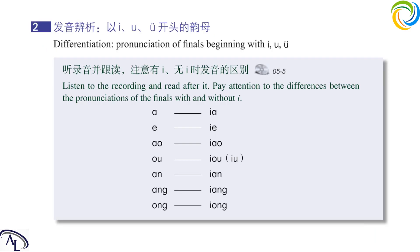听录音并跟读，注意有 i、无 i 时发音的区别。Listen to the recording and read after it. Pay attention to the differences between the pronunciations of the finals with and without i. 啊，鸭，鹅，熬，腰，欧，忧，安，烟，昂，羊，翁。